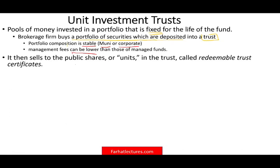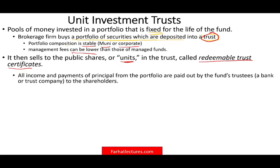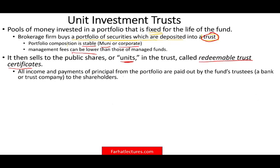This fund will sell to the public shares or units in the trust, called redeemable trust certificates. Once the trust is established, those shares are sold to the public and called units. All income and payment of principal from the portfolio are paid out by the fund — usually through a bank — to the shareholders.